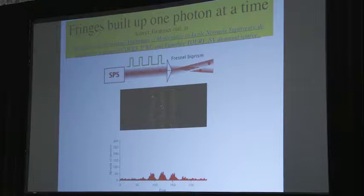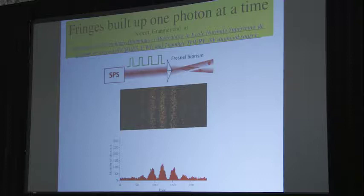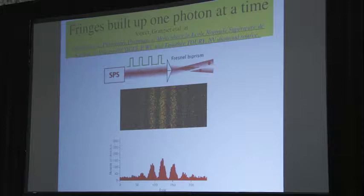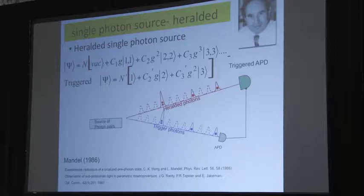And there's a more modern experiment done by a gang around Alain Aspect. Single photon source, pulse, the thing is a Fresnel biprism. You get interference as the beams overlap, and you can see the fringes build up photon by photon by photon. And there you go, that's a modern version of the G.I. Taylor experiment. But this time one photon at a time, not one photon on average at a time.